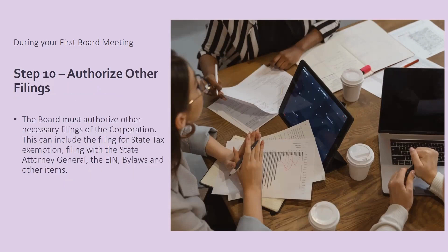Next, you will authorize other filings. This will be any other filing that the founder has done prior to your meeting. Everything that he has done for the organization has to be voted on and accepted as an official document for the organization. This can include your federal tax exemption status, your state tax exemption status, your filing with the attorney general, the EIN, your bylaws, and any other items that the founder has previously completed.